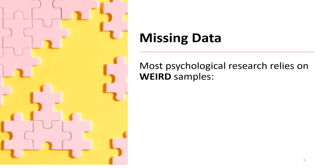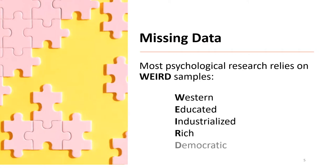The first limitation is missing data. Most general psych research relies on what we call WEIRD samples — samples that are considered Western, educated, industrialized, rich, and democratic. What we mean is that often the results of many studies are based on limited samples that are typically college-educated, come from Western cultures, are very white, and very affluent. You can imagine this is problematic for a lot of reasons.